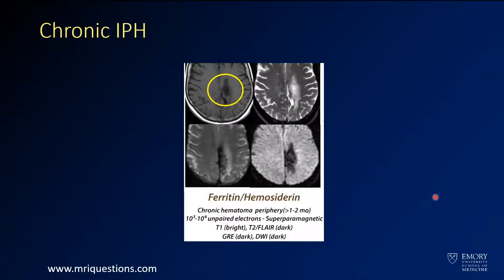Finally, as it becomes chronic, you're going to see something that's dark on almost all sequences — just ferritin, which doesn't have a lot of signal and is dark on most sequences. You see a little bit of darkness on T2, although you do have some gliosis around it. It's dark on diffusion and gradient imaging as well.